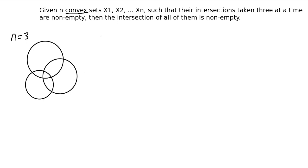Most of you should be familiar with this. For n equals 3, we're given that the intersections taken three at a time is non-empty. But that's what we already have. So really, this is just a trivial case. We need more to work with. Let's go to four sets.